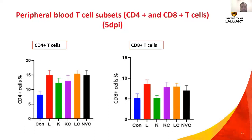For peripheral blood T cells — CD4 and CD8 — collected at 5 DPI, no significant difference between the groups could be reported at that time point.